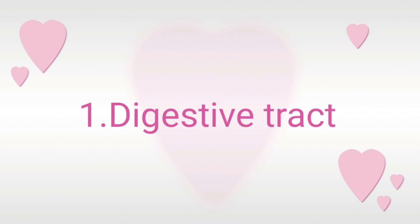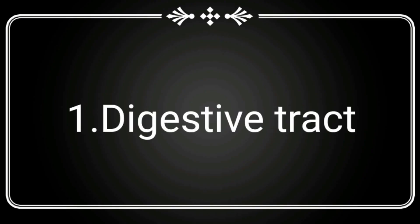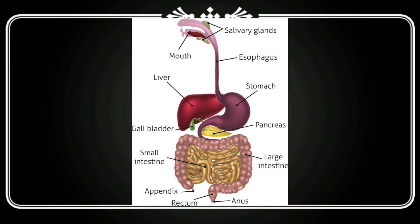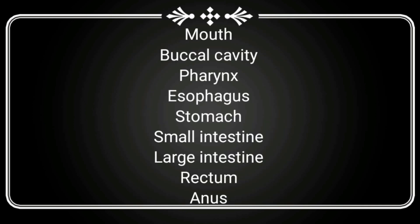The digestive system can be divided into two types: digestive tract and digestive glands. The digestive tract is also known as the alimentary canal. It is a coiled muscular tube extending from the mouth to the anus. It is about 6 to 9 meters long and consists of many specialized divisions, arranged sequentially as mouth, buccal cavity, pharynx, esophagus, stomach, small intestine, large intestine, rectum and anus.